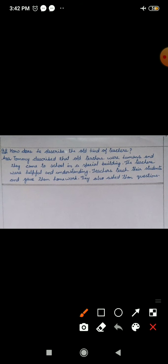Question number 8, how does he describe the old kind of teachers? Tommy ne purane tarah ke teachers ko kaise describe kiya? Tommy described that old teachers were humans. Usne bataya ki jo purane teachers the wo insaan hote the. And they came to school in a special building, aur wo ek school naam ke special building mein padhane ke liye aaya karte the. The teachers were helpful and understanding, aur insaan jo teacher hote the wo bahut helpful hote the bachchon ke liye aur bachchon ke liye understanding hote the unki problems ko samajhte the. Teachers teach their students and gave them homework, teachers apne bachchon ko students ko padhate the aur unhe homework dete the, and they also ask the questions.